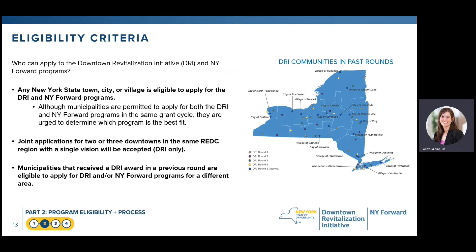Towns, cities, and villages are eligible to apply; counties and special districts such as fire districts are not eligible to apply as primary applicants. However, many of those regional entities or special districts can be great partners within the application process. For DRI Round 6 only, joint applications will be accepted for two to three downtowns in the same Regional Economic Development Council region. Those joint applications must demonstrate a shared vision and goals that can be achieved when working together. The New York Forward program does not permit joint applications.